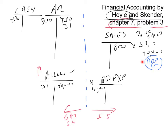At the end of year one, the accounts receivable balance is $339,000, the allowance for doubtful accounts is $9,000, sales is $800,000, and bad debt expense is $40,000. The figures are all in thousands.